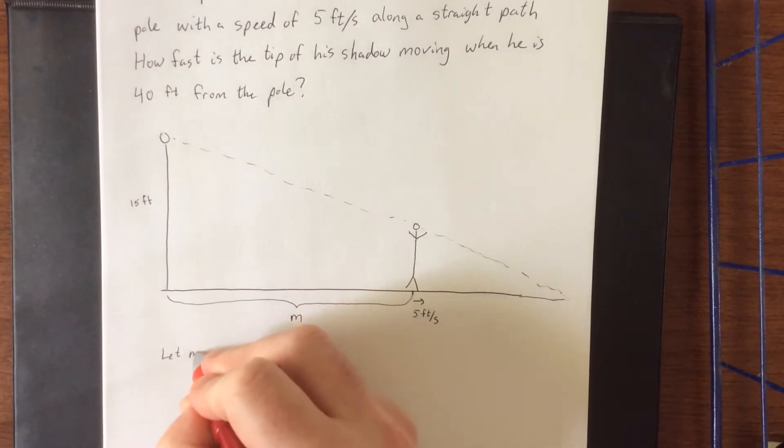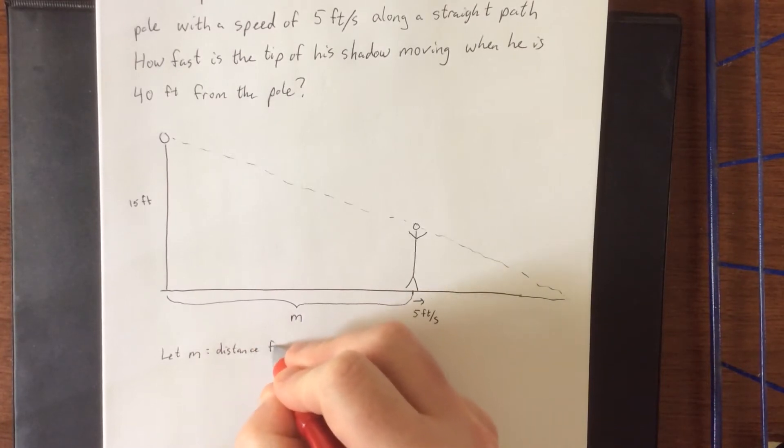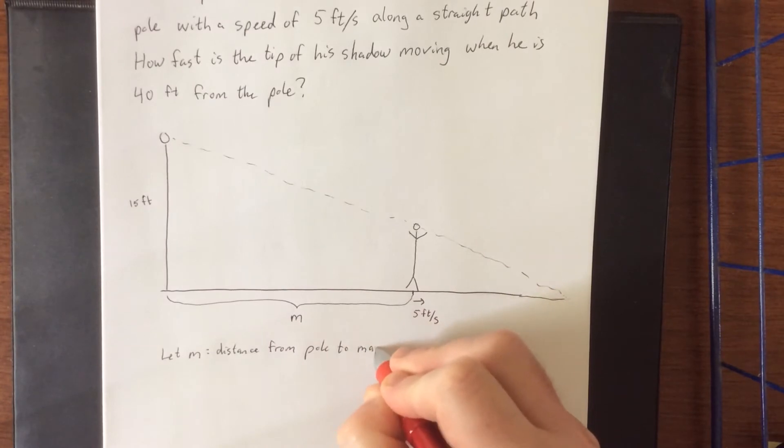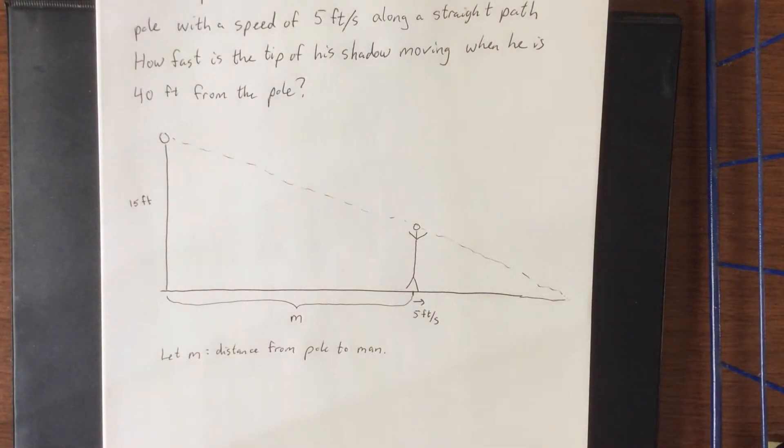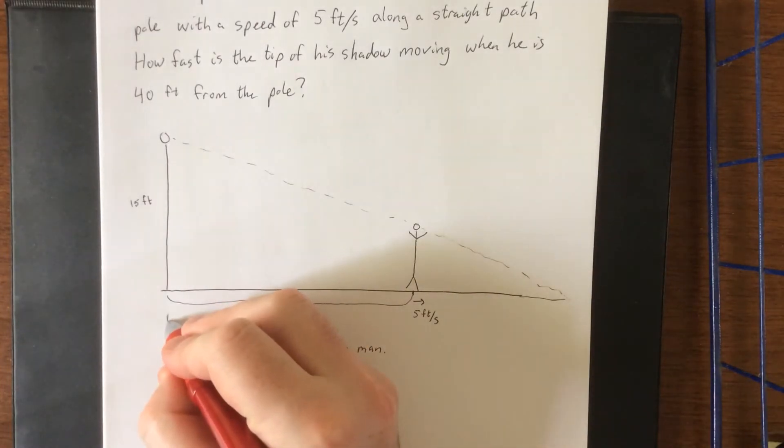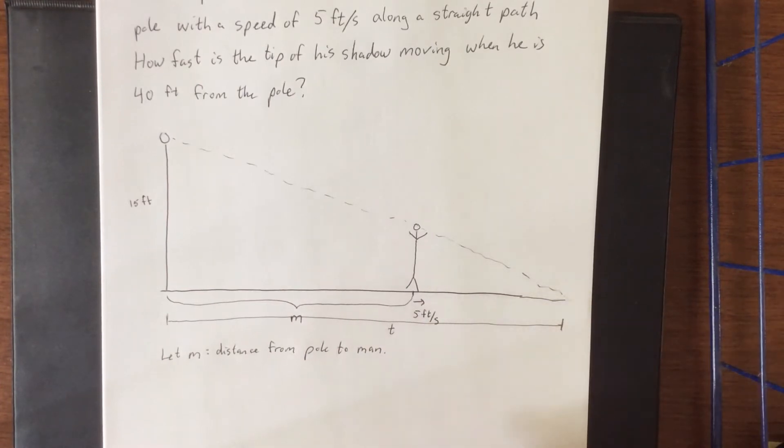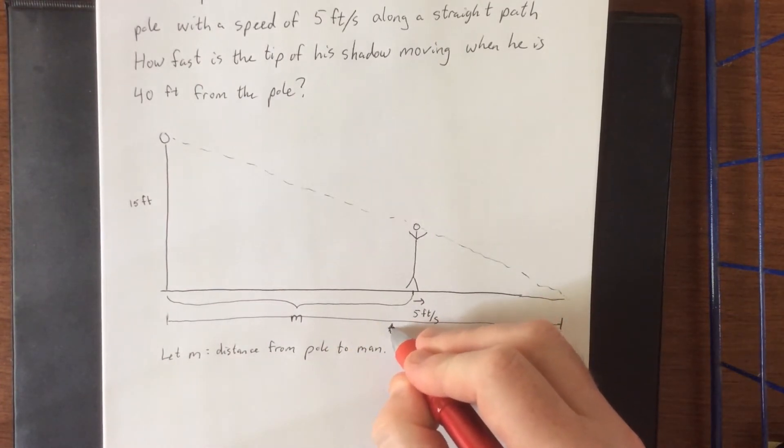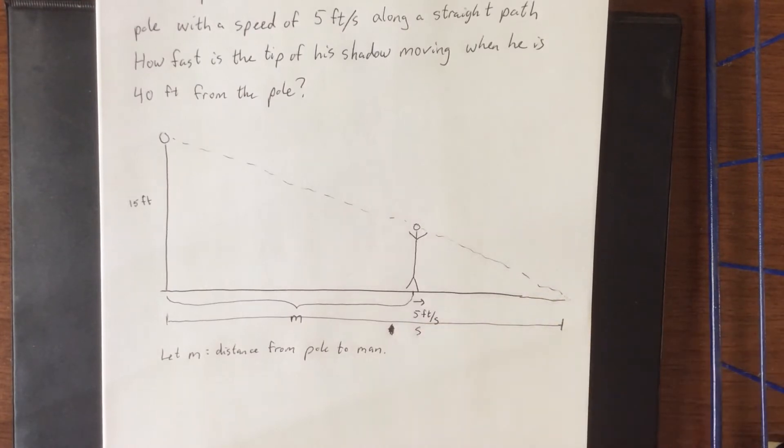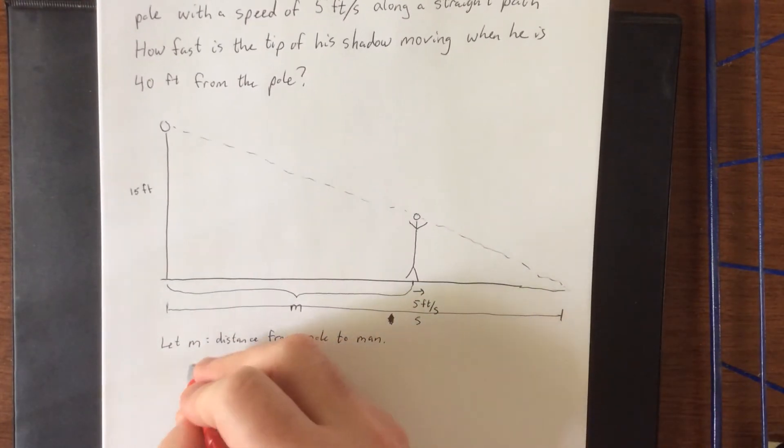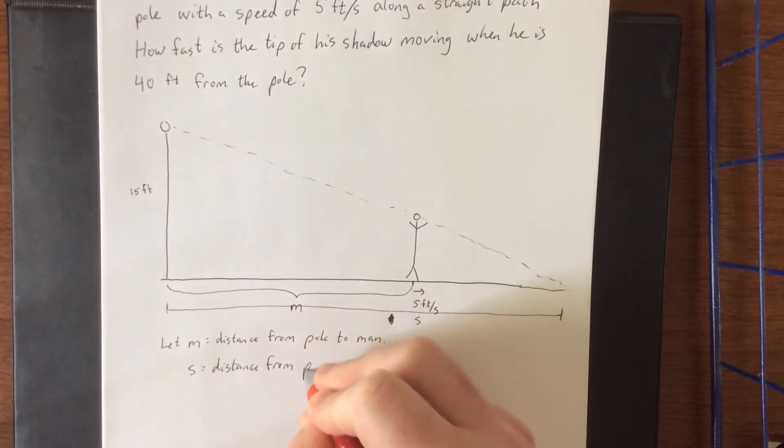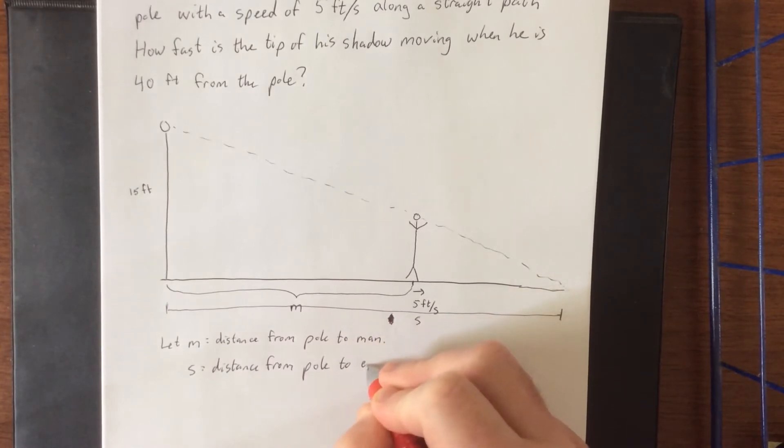So let M be equal to distance from pole to man. Another quantity that we should probably define is going to be the distance from the pole to the tip of the shadow. We'll use T for the tip of the shadow. No, because we're going to be differentiating with respect to T. Definitely never use T. We'll use S for shadow. So let S be the distance from the pole to the end of the shadow.